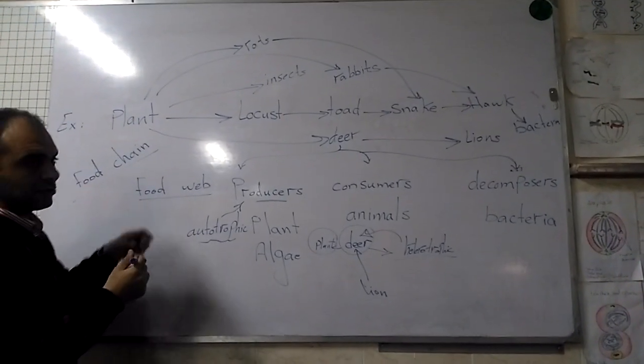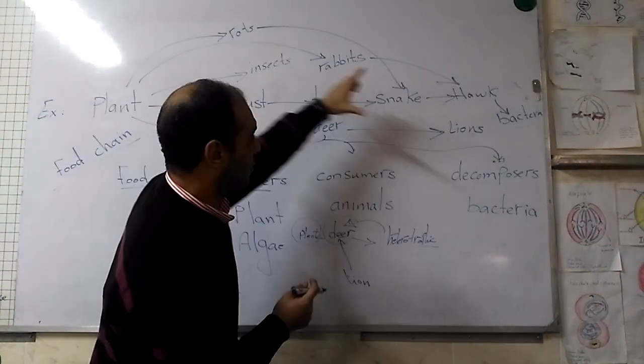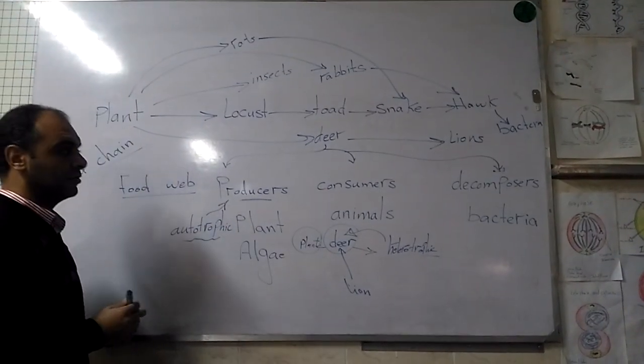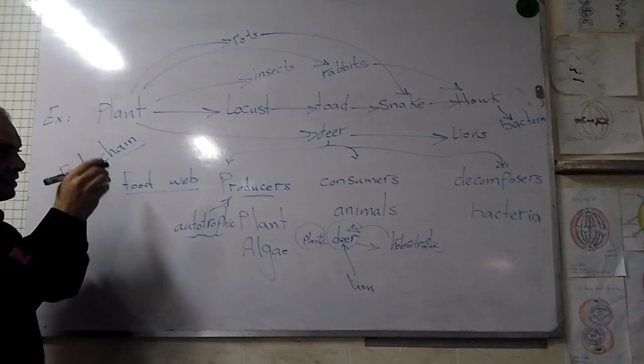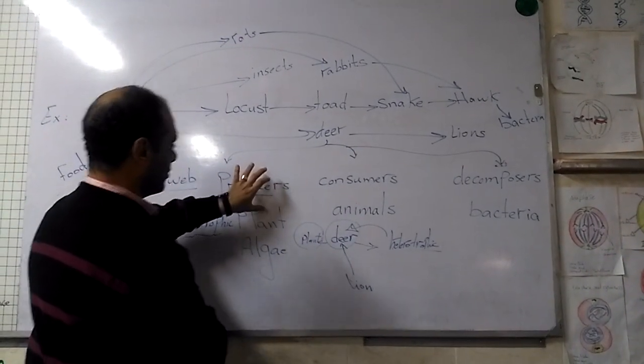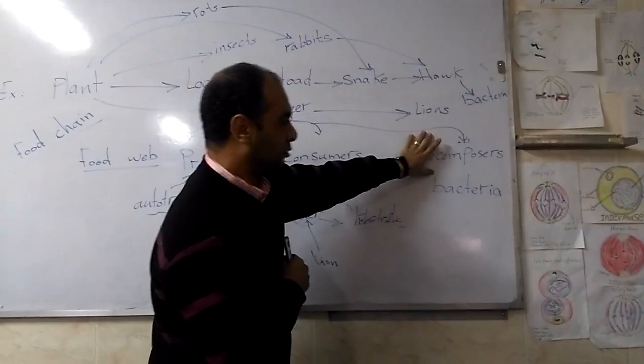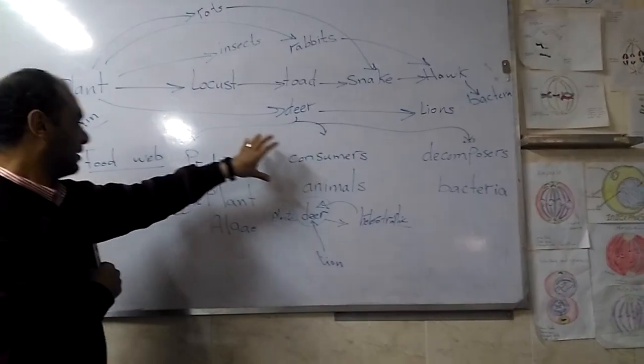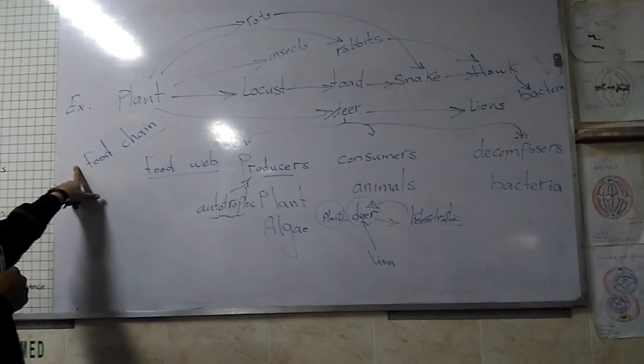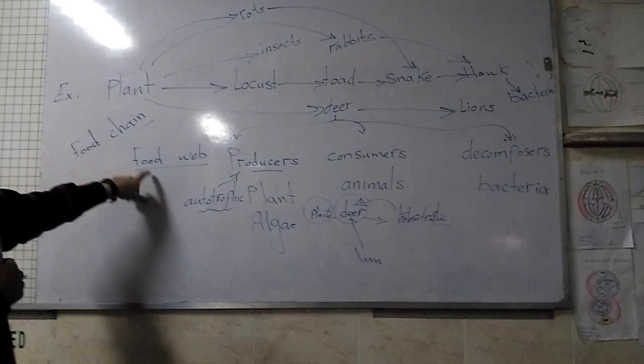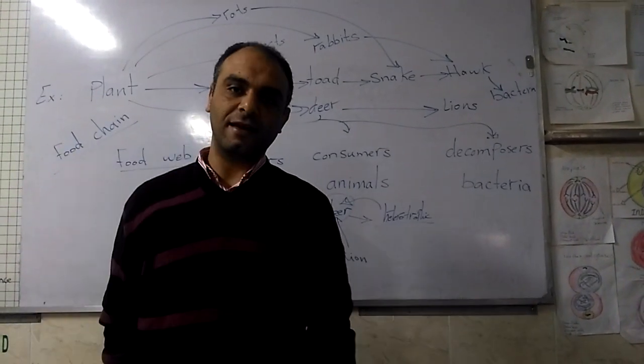It refers to the path of energy. So we can say that energy levels divide living organisms into producers, consumers, and decomposers. From that, we can conclude the food chain and the food web. Thank you.